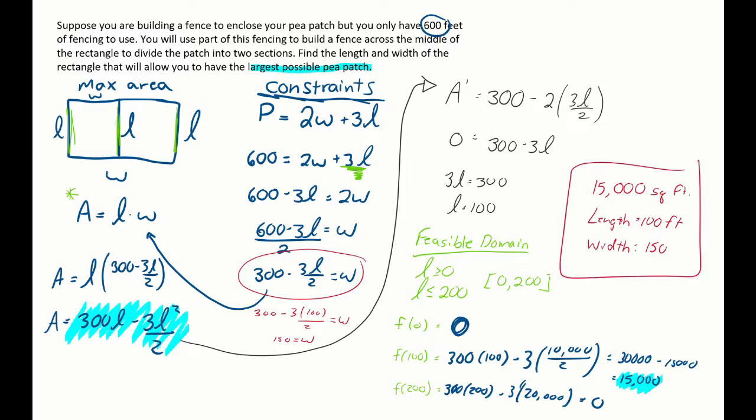The largest p-patch I can get is 15,000, length of 100, width of 150. So a little bit different. Pay attention to what you're optimizing. In the last one, we optimized perimeter. In this one, we optimized area. And it's just the same equations, but set up a little different.